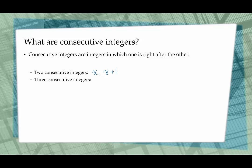If it asks for three consecutive integers — like 7, 8, and 9, or negative 20, negative 19, negative 18 — we would represent the first one with x, the next one with x plus 1, and then the third as x plus 2. 9 is 2 bigger than 7, and negative 18 is 2 bigger than negative 20. So that's how we represent three consecutive integers.